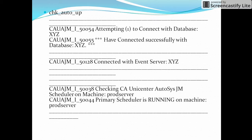Then it will check for the connectivity with the event server. It will display 'connected with event server', and it will indicate whether the Autosys server is running on the primary scheduler or the secondary scheduler — displaying details like 'primary scheduler is running on machine: machine name'.